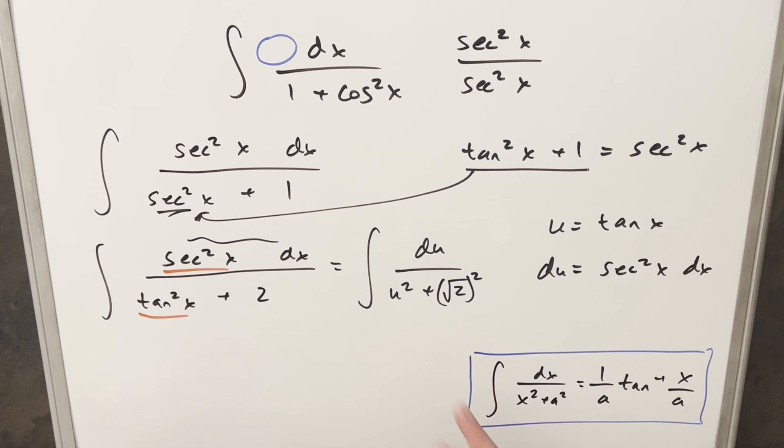Now we have our formula over here. Our integral is in u and this is in x. But we're in the exact right formula form of x squared, a squared. In this case, our a is going to be just square root of 2. So we can use this formula and just plug in for a.